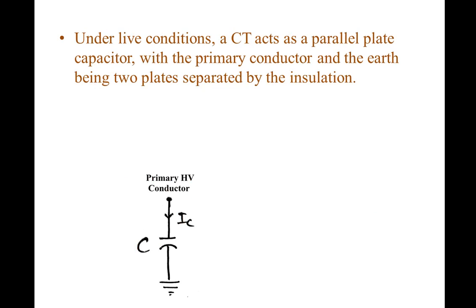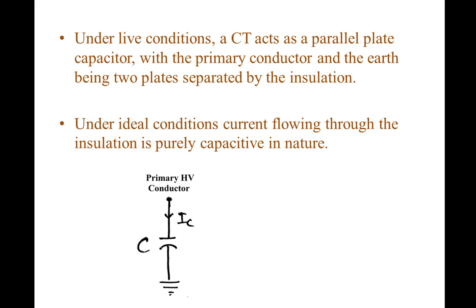Under live conditions, a CT acts as a parallel plate capacitor, with the primary conductor of the CT and the earth connection being two plates separated by the insulation. Under ideal conditions, the current flowing through the insulation is purely capacitive in nature. Therefore, as shown in this figure, the current IC leads the applied voltage by 90 degrees.